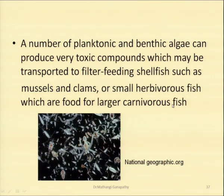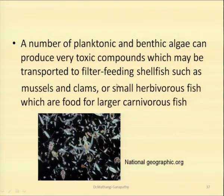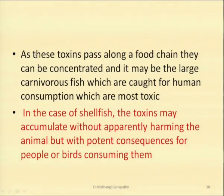Small herbivorous fish are food for the larger carnivorous fish. You have the algae which grow in the marine environment. As a part of their metabolic activity, they produce extremely toxic compounds. Herbivorous fish feed on the algae. Mussels and clams also feed on the algae. Either humans feed on the mussels and clams, or these small herbivorous fish are eaten in turn by the carnivorous fish. As these toxins pass along the food chain, they can be concentrated, and it may be the large carnivorous fish, caught by the human for consumption, which are most toxic.